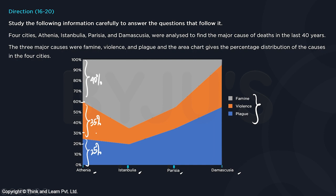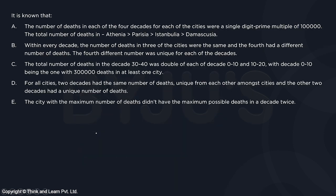It is known that the number of deaths in each of the four decades for each of the four cities was a single-digit prime multiple of 1 lakh — so 2 lakh, 3 lakh, 5 lakh, or 7 lakh. The total number of deaths follow a specific order: within every decade, three cities had the same number of deaths, and the fourth had a different number. These conditions help us figure out how many deaths happened due to which reason.